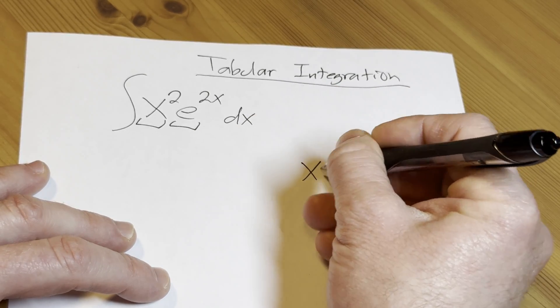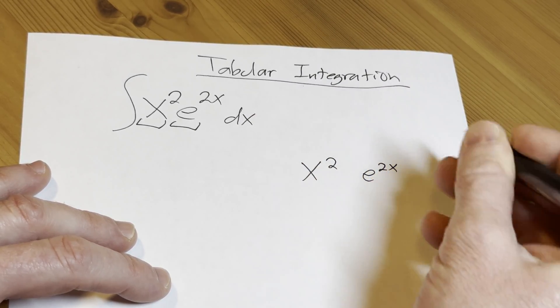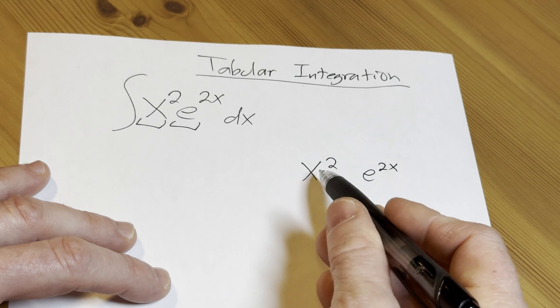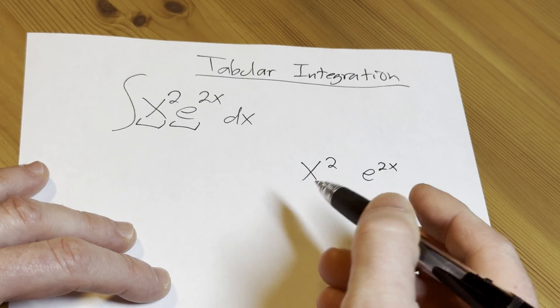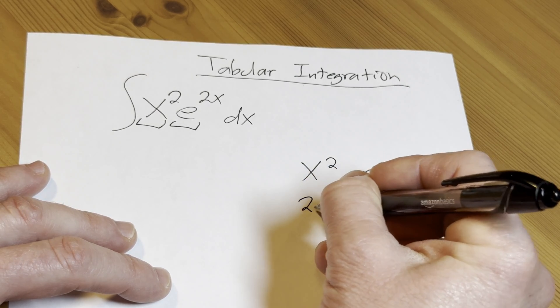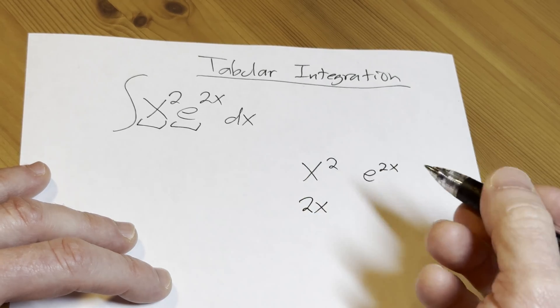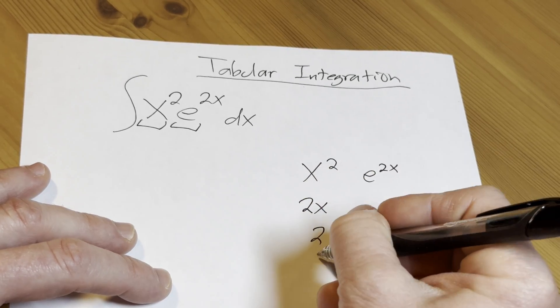So the derivative of x squared is 2x. You bring down the 2, subtract 1 from the exponent. You do it again, you get 2. You do it again, you get 0.